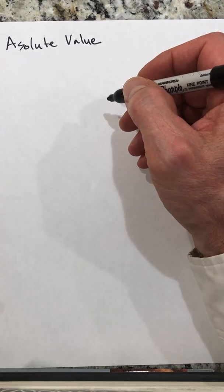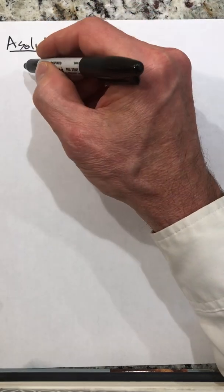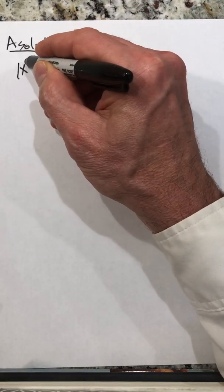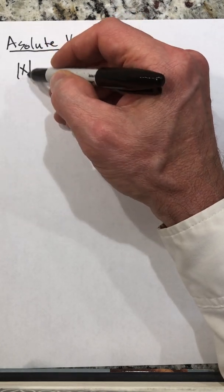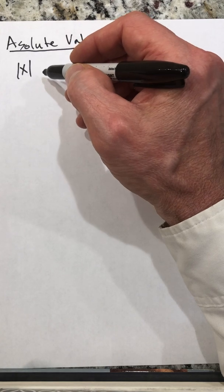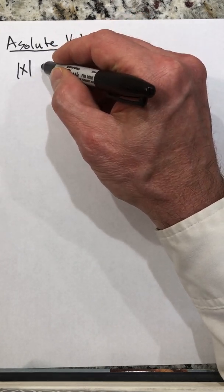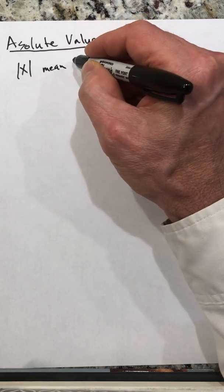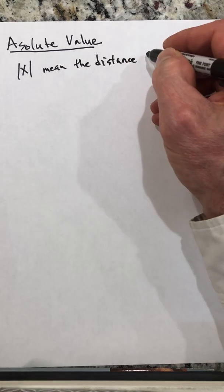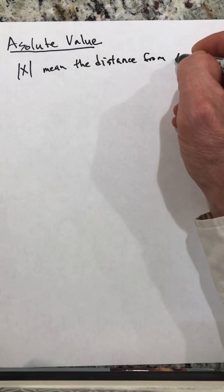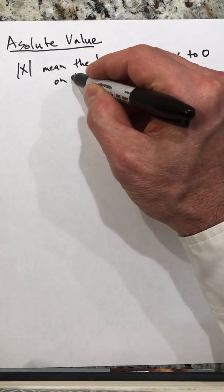Let's talk about absolute value. Absolute value can be thought of as distance. The absolute value marks are two vertical marks, and when we write the absolute value of X, this means the distance from X to zero on the number line.